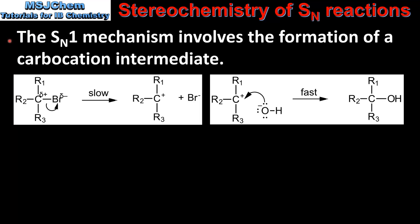The SN1 mechanism involves the formation of a carbocation intermediate. Here we can see the mechanism of the two-step reaction. In the first step, the carbon to halogen bond breaks heterolytically forming a carbocation intermediate. In the second step, the nucleophile — which in this example is the hydroxide ion — bonds with the carbocation intermediate to form a tertiary alcohol.